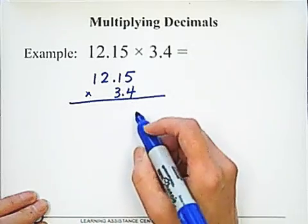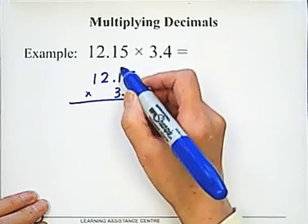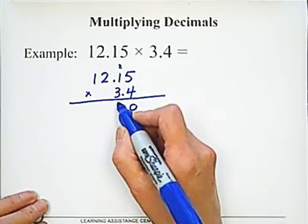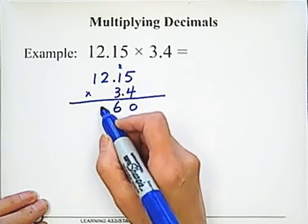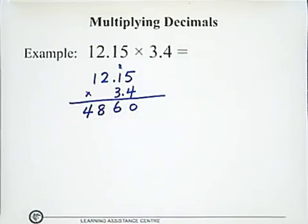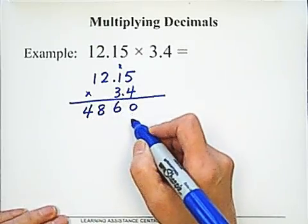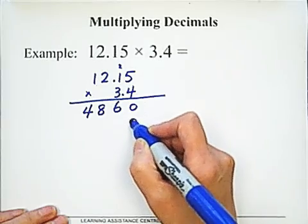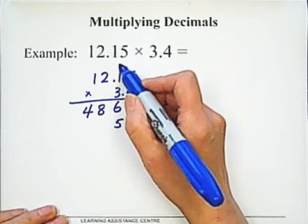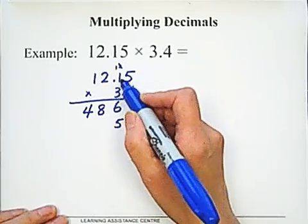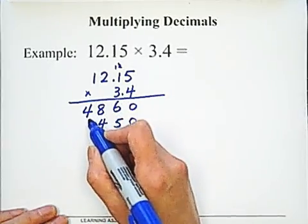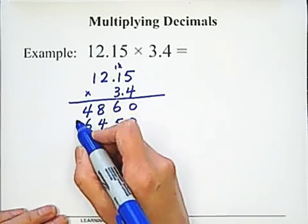Write it this way. 4 × 5 is 20, mark 2. 1 × 4 is 4 plus 2 is 6. 2 × 4 is 8. 1 × 4 equals 4. Then 3 × 5, so we put 0 here. 3 × 5 is 15, mark 1. And 1 × 3 is 3 plus 1 is 4. And 2 × 3 is 6.